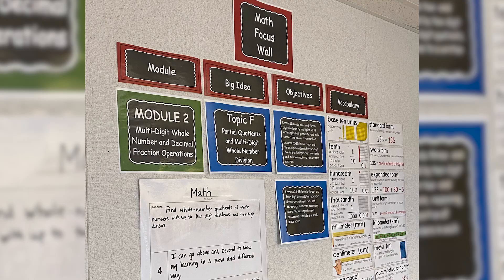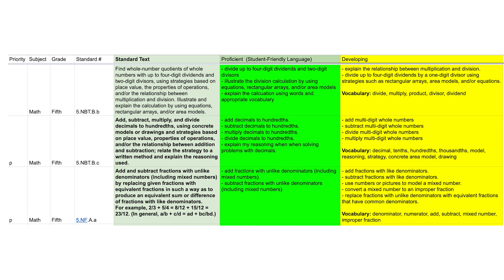Teams further unpacked each standard to determine the criteria for proficiency at the appropriate level of rigor based on the cognitive growth targets. Proficiency scales were written with this criteria and leveled as emerging, developing, proficient, and advanced to identify the performance level of the student.